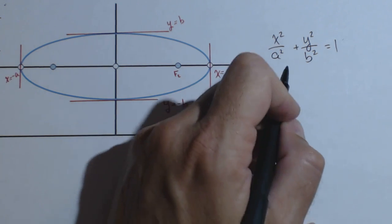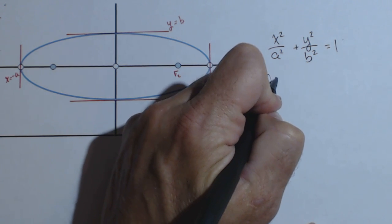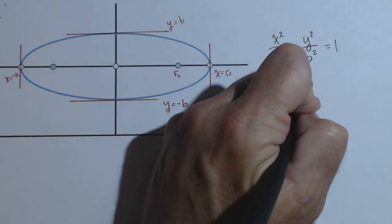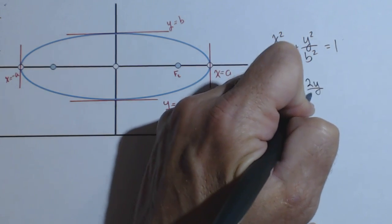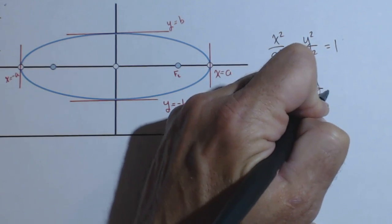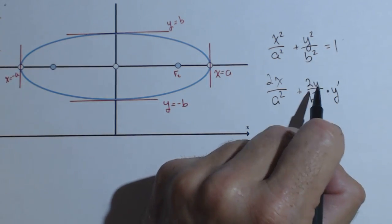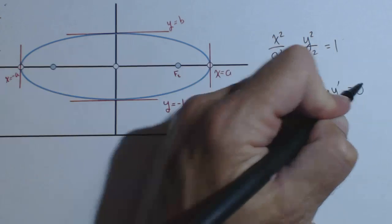We take the derivative of the x terms just like we normally would, so this would be 2x over a squared. This will be real similar, it'll be 2y over b squared times y prime, because we're doing implicit differentiation with the chain rule, equals 0.